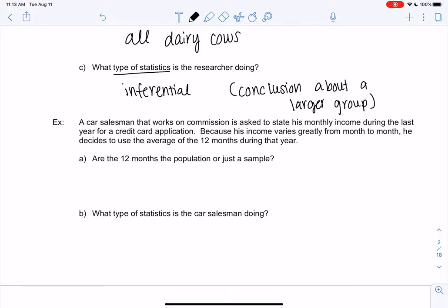So in this case, since he's only describing the last year, the 12 months would be the entire population. We're not describing two years or three years or four years. We're only describing this year.